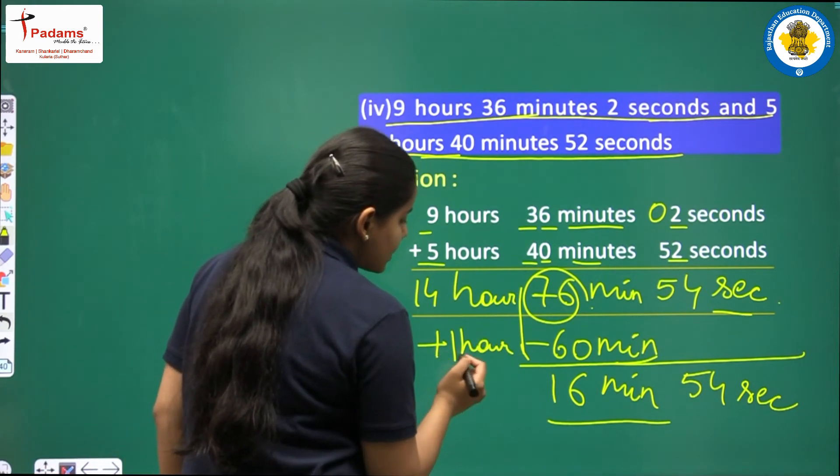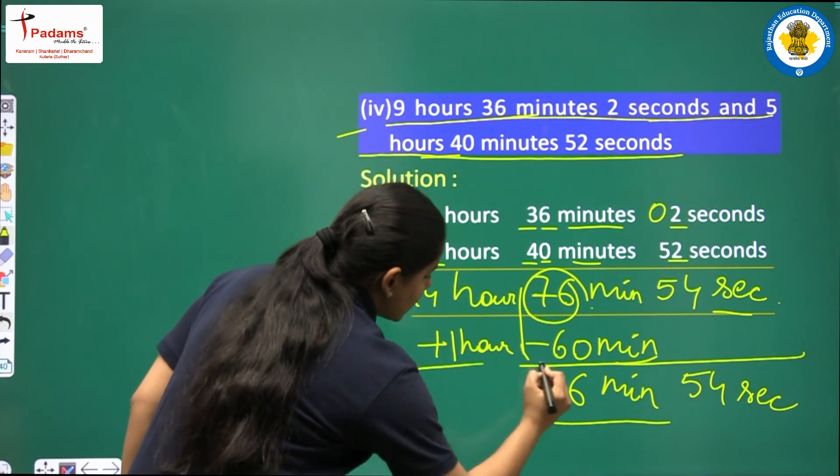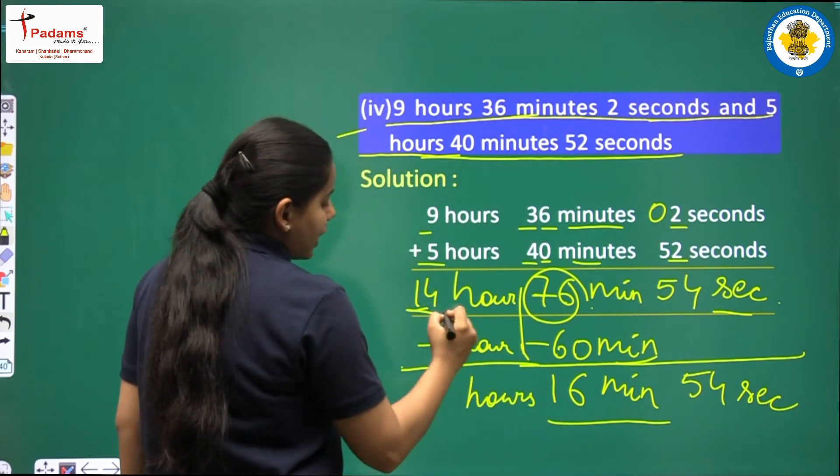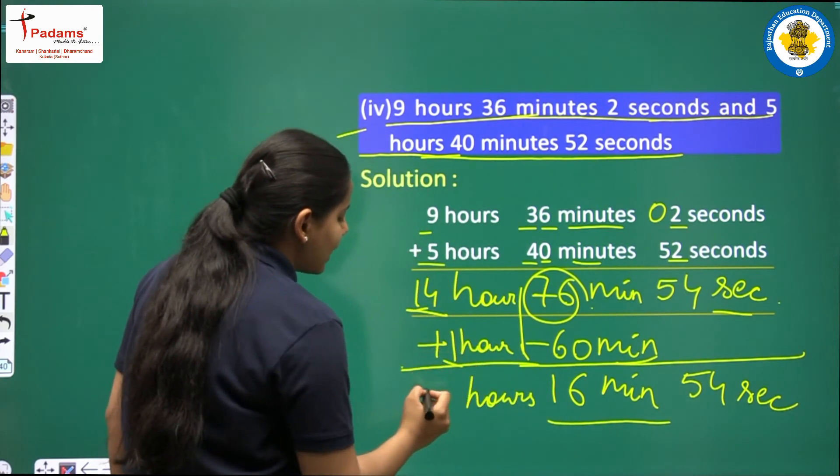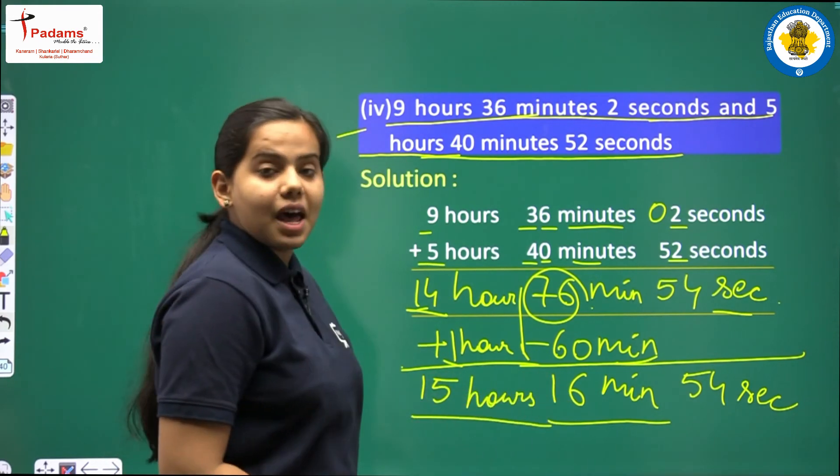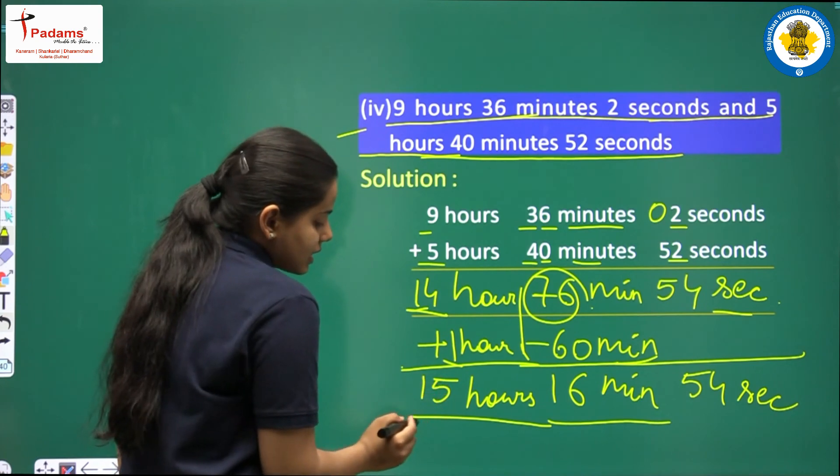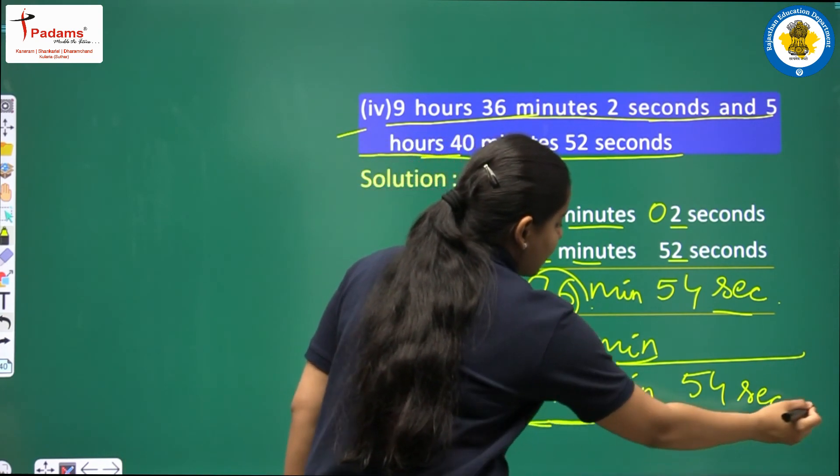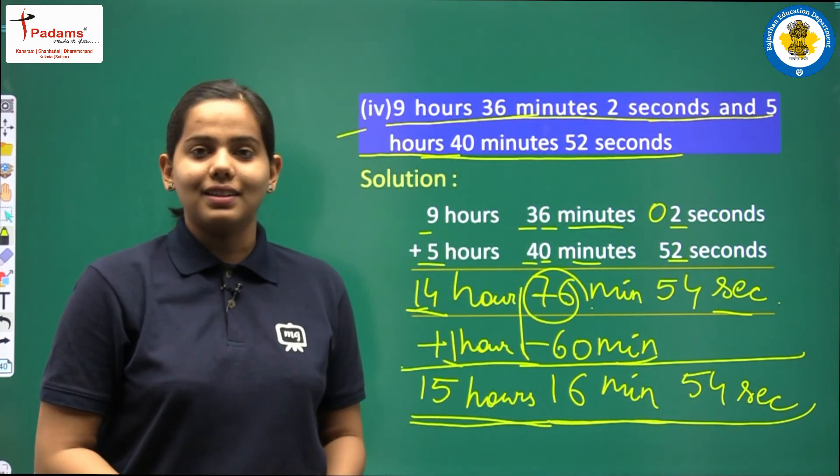See, from here we will add plus 1. The answer will come in hours. So we have got here 14. In 14 we will add plus 1. The answer we will get as 15. Now this is our final answer children. The answer is 15 hours 16 minutes and 54 seconds.